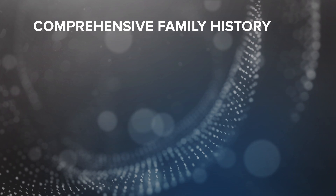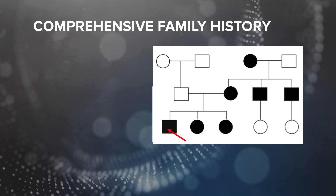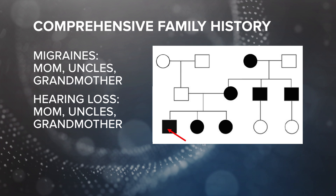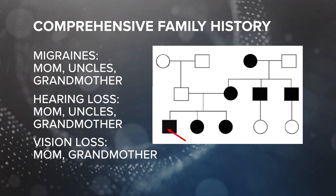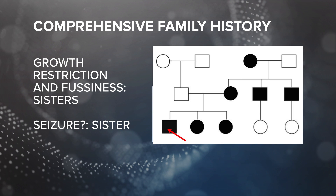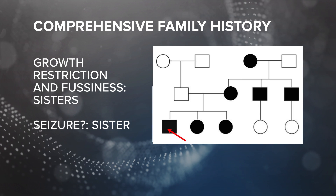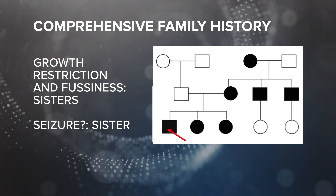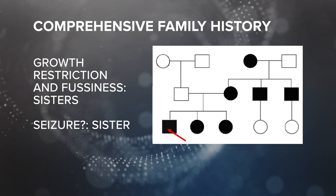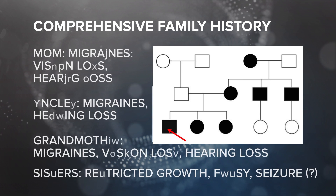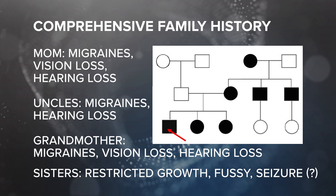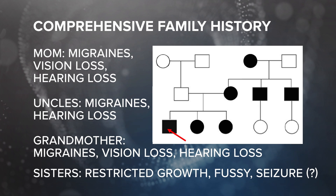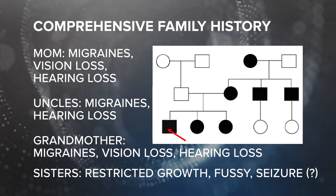As you take your patient's family history, you notice that your patient's mom, both uncles, and his grandmother all reported chronic migraines. All have poor hearing. The patient's mom and grandmother also have experienced vision loss. The patient's younger sisters are only 2 months and 14 months old, and both are significantly smaller than they should be for their age. Both are unusually fussy, and one may have had a seizure recently. Let's look at this list by family member.